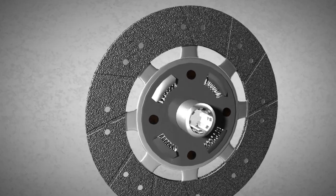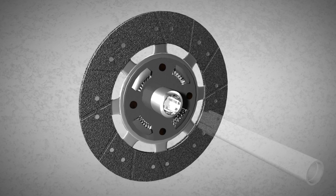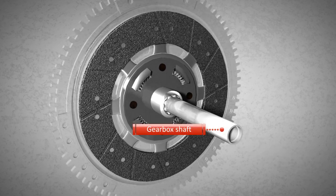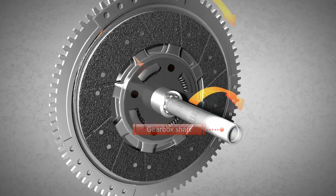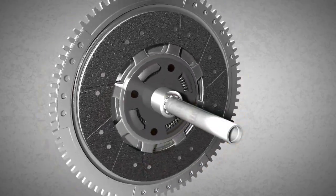The clutch disc is connected to the gearbox through the gearbox shaft. Consequently, the wheels of the vehicle only rotate when the flywheel is in contact with the clutch disc.